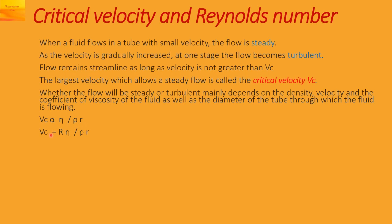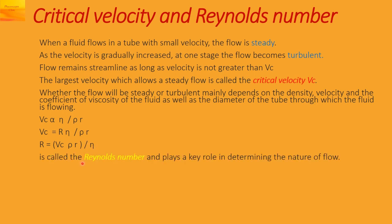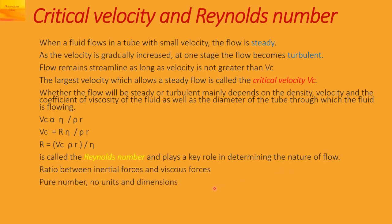So Vc can be written as R times eta upon rho r. Rearranging this equation, we get R equal to Vc rho r upon eta. Here R is called the Reynolds number and it plays a key role in determining the nature of the flow, whether it is streamlined or turbulent. It is a pure number — it has no units, no dimensions.